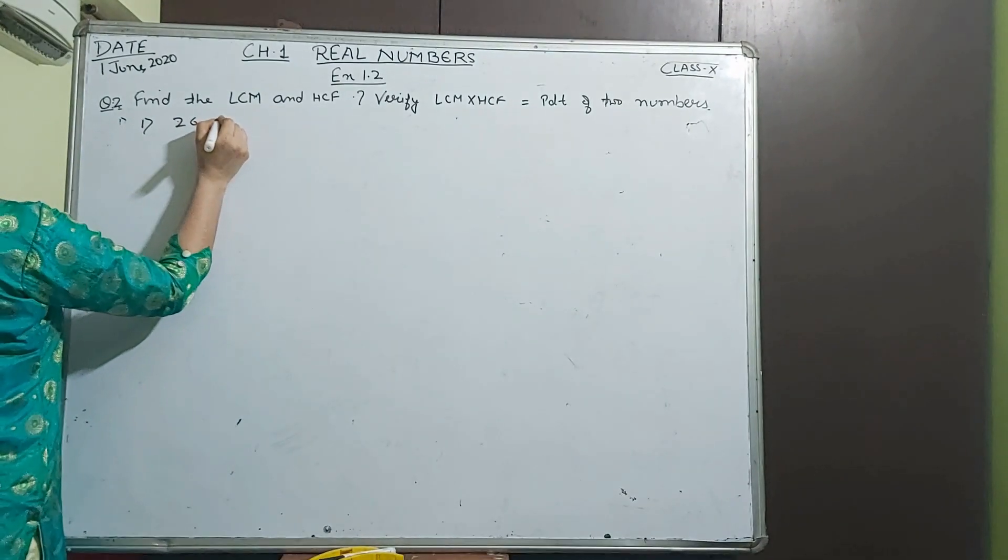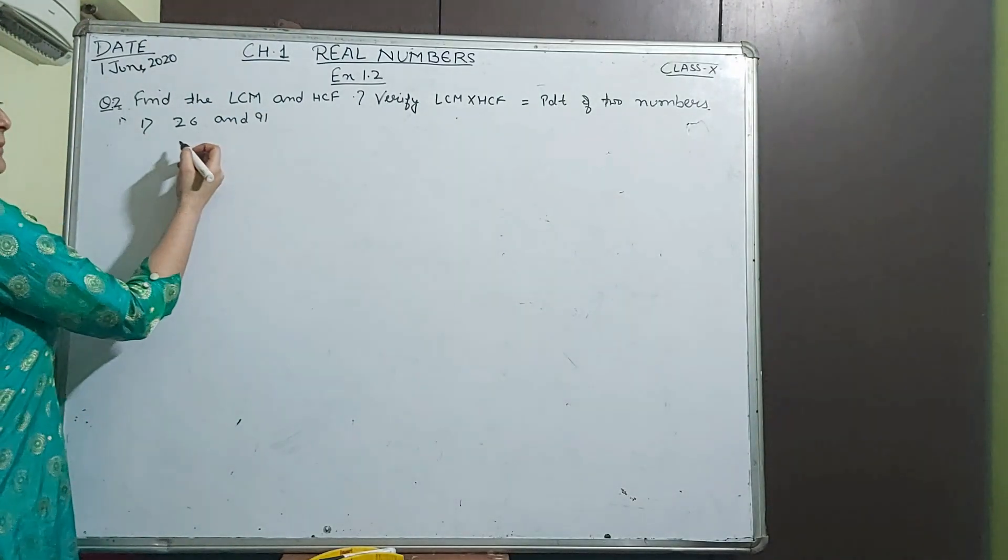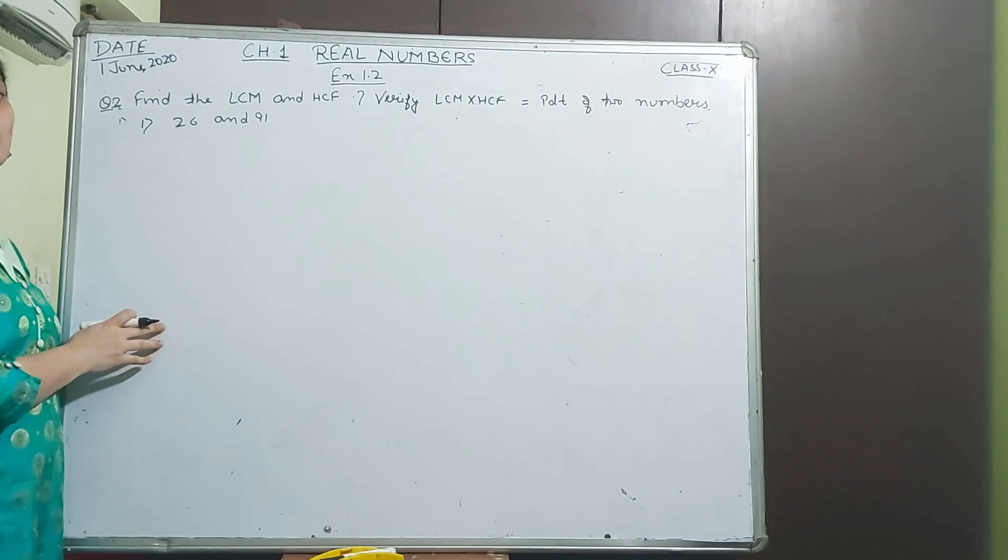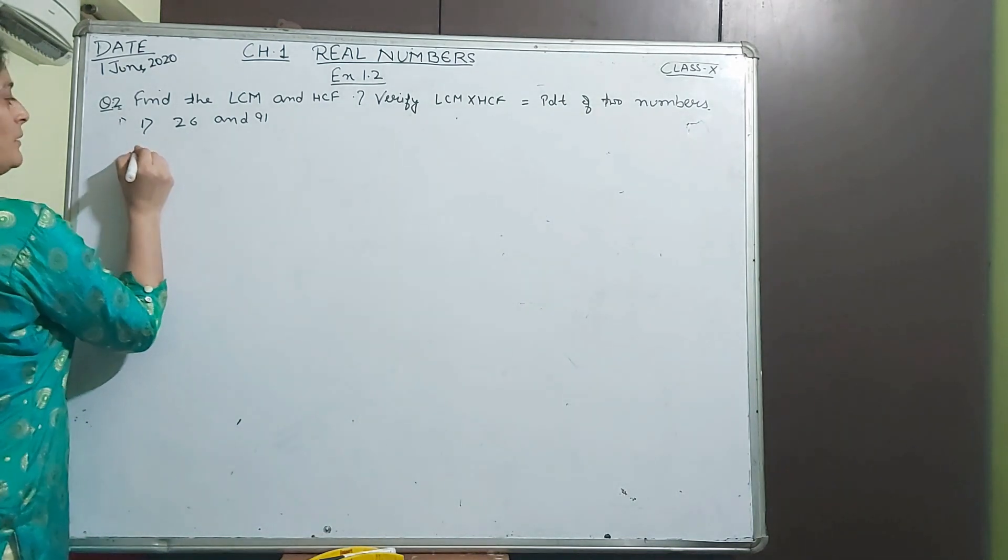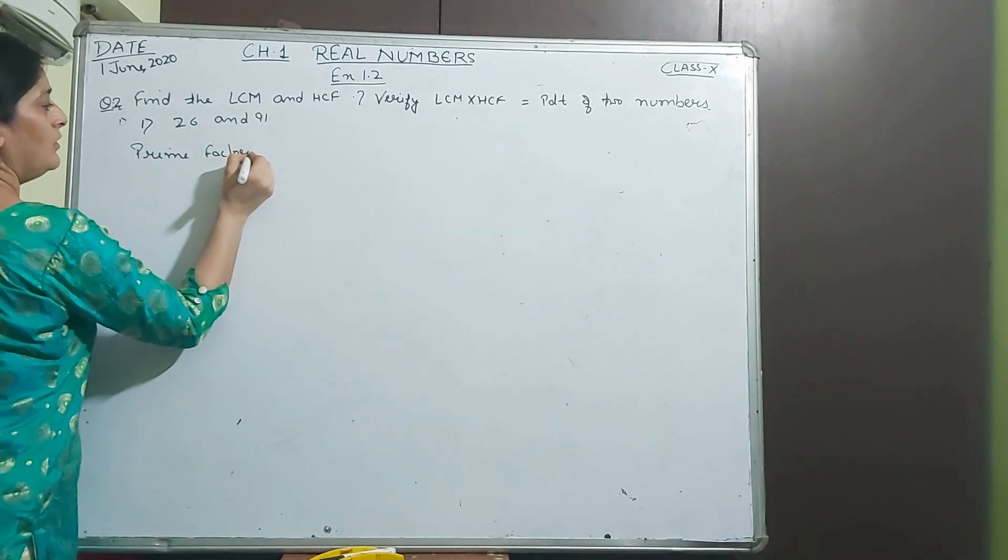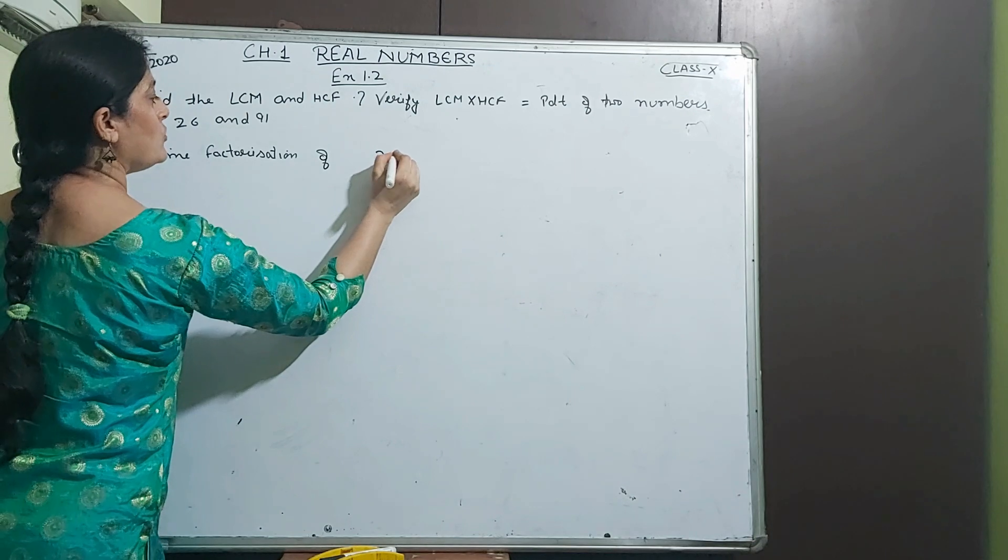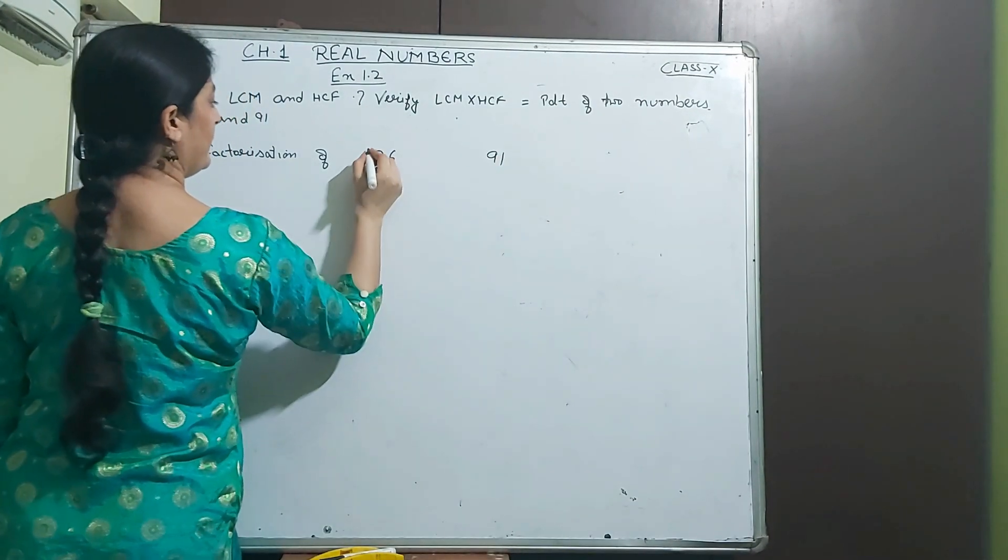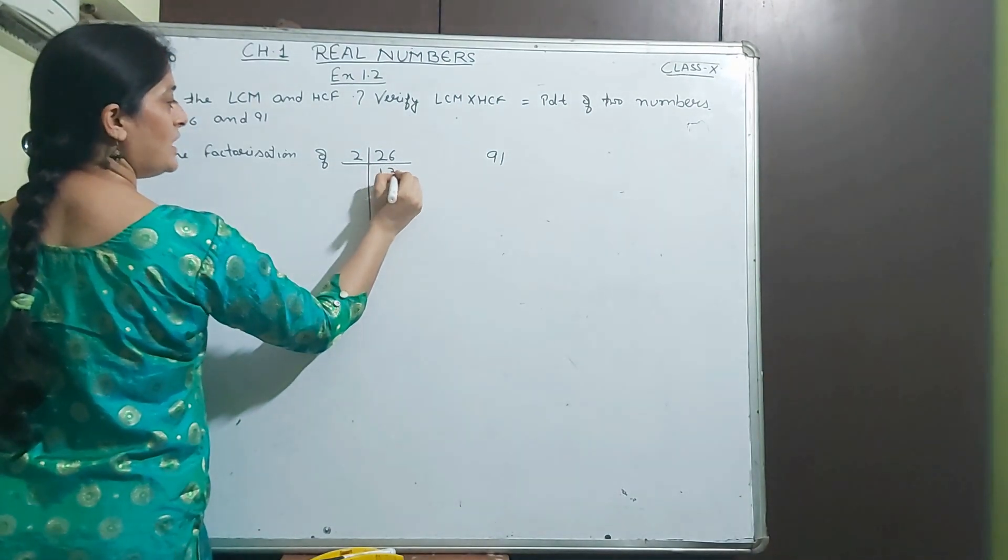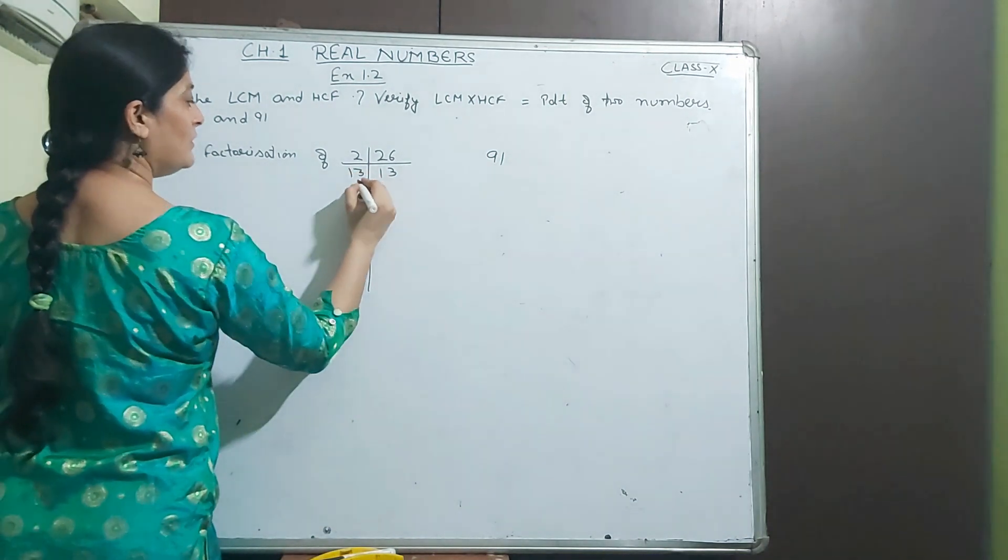Find the LCM, lowest common multiple, and HCF, highest common factor, and also verify that LCM into HCF equals product of two numbers. Now I am going to take the first example, 26 and 91.